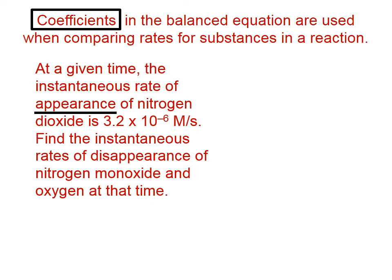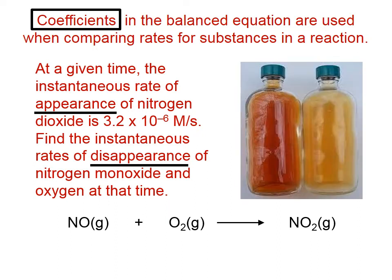Find the instantaneous rates of disappearance of nitrogen monoxide and oxygen. When we say the rate of disappearance, we're talking about nitrogen monoxide and oxygen as being reactants, because clearly the reactants are going to disappear, whereas the products are going to appear. That is a roundabout way of telling us that the NO and O2 are reactants, and NO2 is a product. In case you're wondering what NO2 looks like, it's a brownish gas. Let's balance this equation: 2, 1, 2.